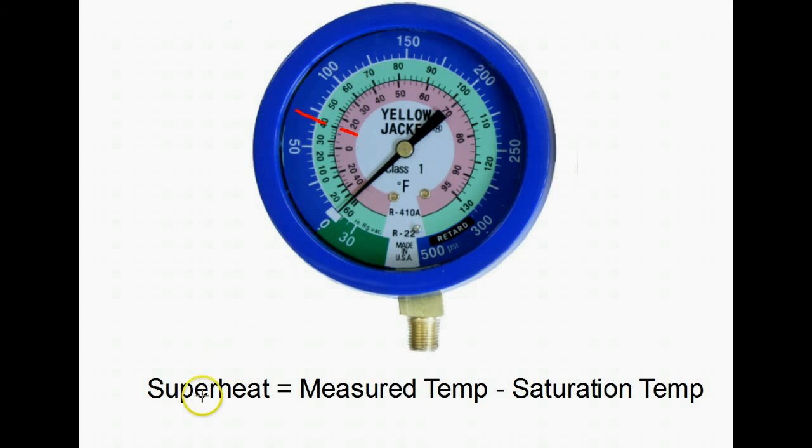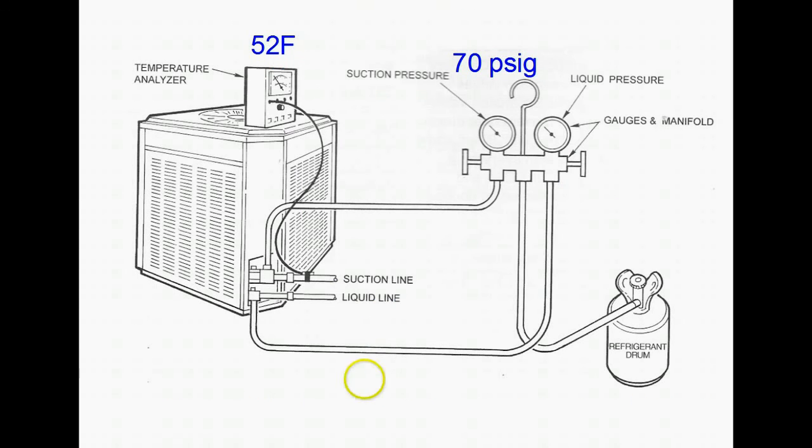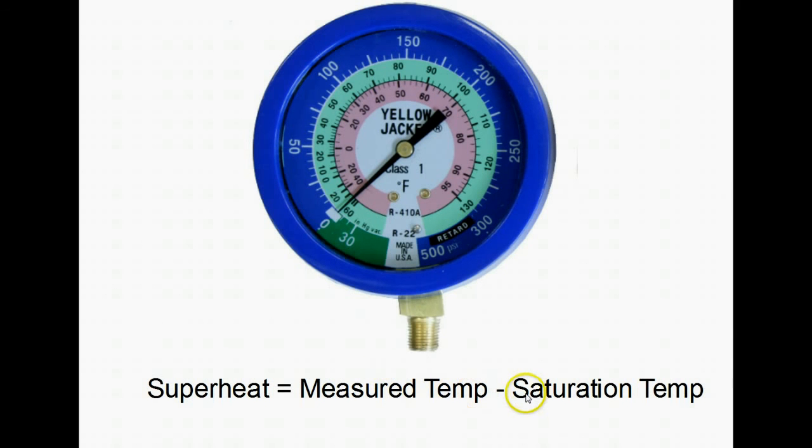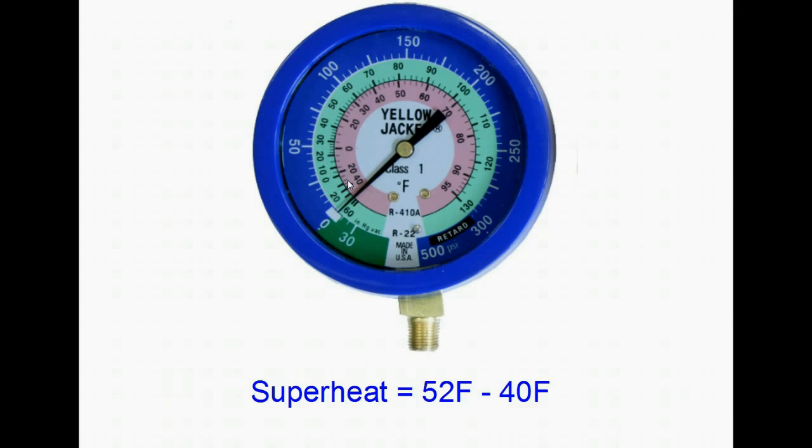And remember, superheat equals measured temperature. So that's your temperature that you're measuring at the suction line right here, minus the saturation temperature, which you have converted from your low side pressure gauge to 40 PSIG. That's the center of the evaporator coil. So your superheat equals 52 degrees, which is your measured temperature, minus 40 degrees, which is your saturation temperature. And that comes out to 12 degrees Fahrenheit.